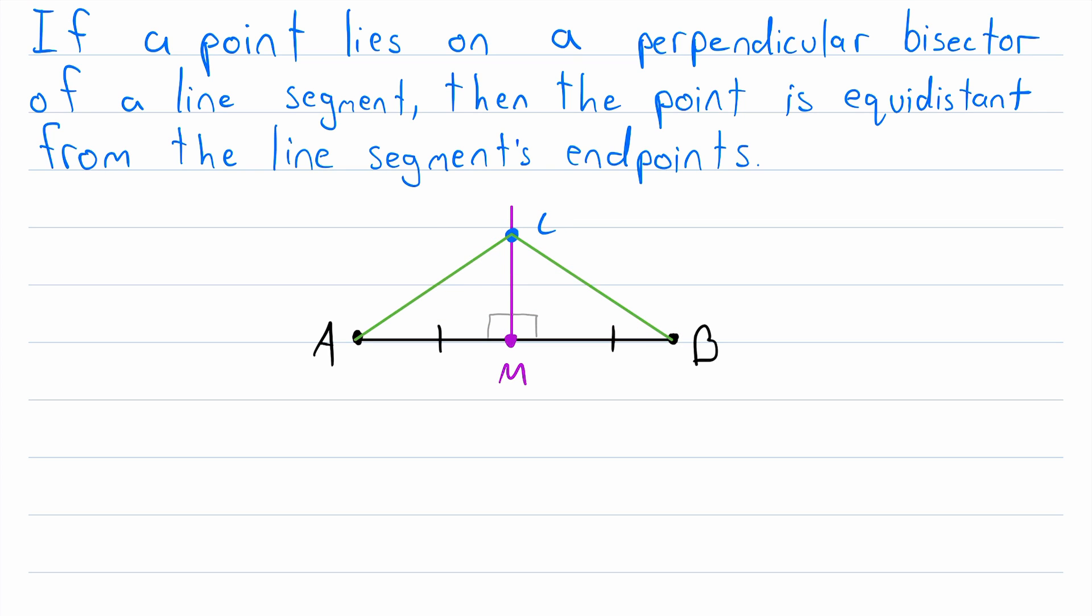Here, since we know that our point C is not on the line segment AB, we know that this is a triangle, and so is this, and so is this.